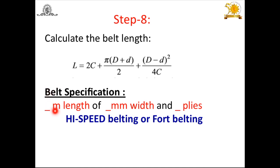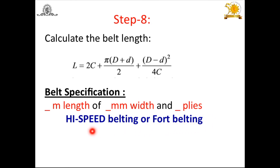Finally, write the complete belt specification: belt length (in meters) × width (in mm) × number of plies × belt type (high speed belting for general purpose, or Ford belting for heavy duty). For example: 5 m length × 40 mm width × 3 plies, high speed belting.